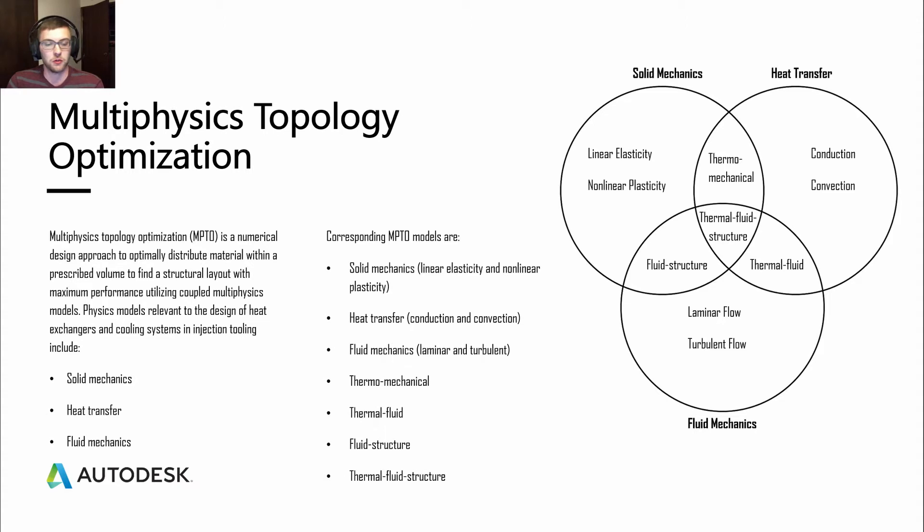Multi-physics topology optimization is a numerical design approach to optimally distribute material within a prescribed volume to find a structural layout with maximized performance utilizing coupled multi-physics models. When it comes to heat exchangers or cooling systems and injection tooling, solid mechanics, heat transfer, and fluid mechanics are the physics models that are most relevant.